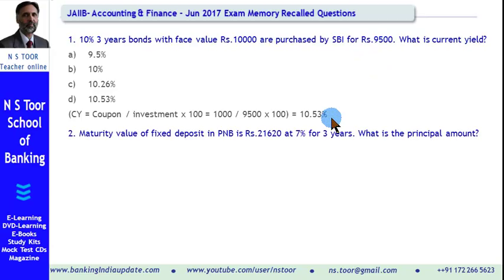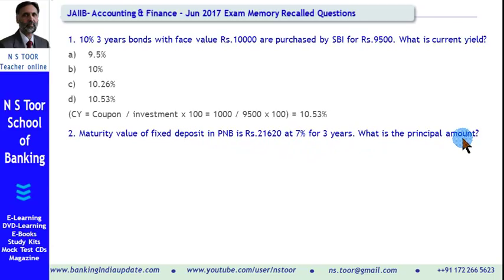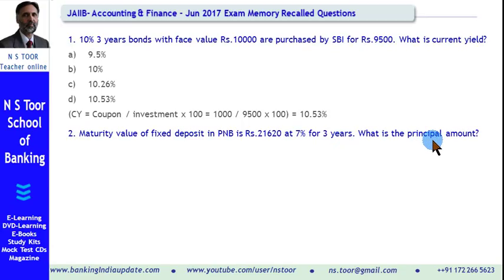Let us see question number 2. The maturity value of a fixed deposit in Punjab National Bank is Rs. 21,620 at 7% rate of interest for 3 years. What is the principal amount? From the question, we can understand that the future value or maturity value is given, the rate of interest is also given, and the period is also given. To find the principal amount, we have to find the present value.